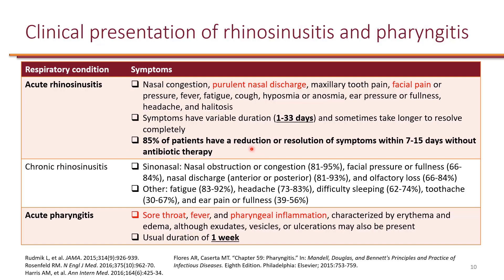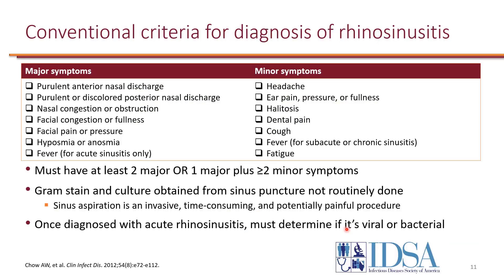When it comes to acute pharyngitis, the hallmark is a triad of sore throat, fever, and pharyngeal inflammation. This sore throat is worse with swallowing. The pharyngeal inflammation is characterized by erythema and edema, and it usually lasts for one week.